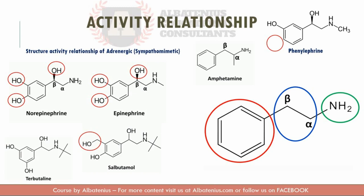The N-tert-butyl group increases beta-2 selectivity, as seen in terbutaline and salbutamol. Large substitutions on the amino group also decrease metabolism by monoamine oxidase.